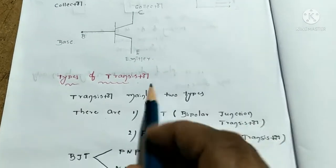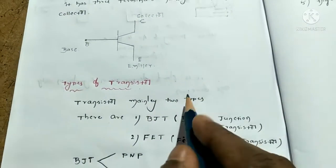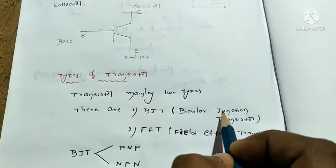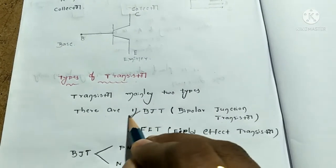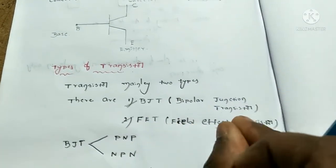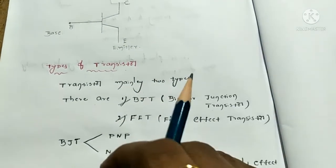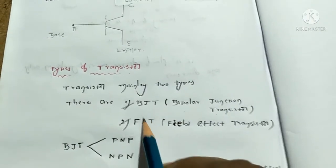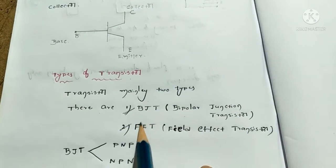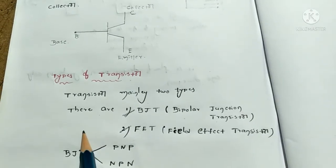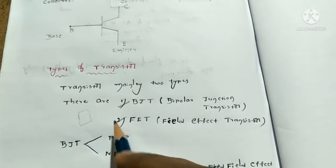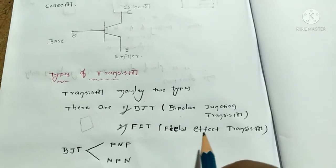Transistors are mainly 2 types: BJT and FET. BJT means Bipolar Junction Transistor. These are very important for electronics. You will apply these devices — BJT and FET — and these are very important. FET stands for Field Effect Transistor.